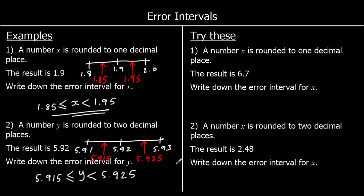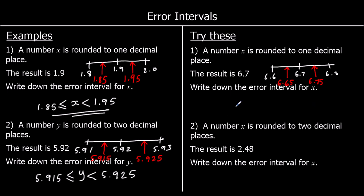Okay, two for you to try — give these a go. A number x is rounded to one decimal place, the result is 6.7 — write the error interval. We're in one decimal place, so the one up is 6.8 and the one back is 6.6. Our number could have been anything between the halfway points: 6.65 and 6.75. So x is bigger than or equal to 6.65, but it cannot equal 6.75 — if it were 6.75 we'd round up to 6.8.